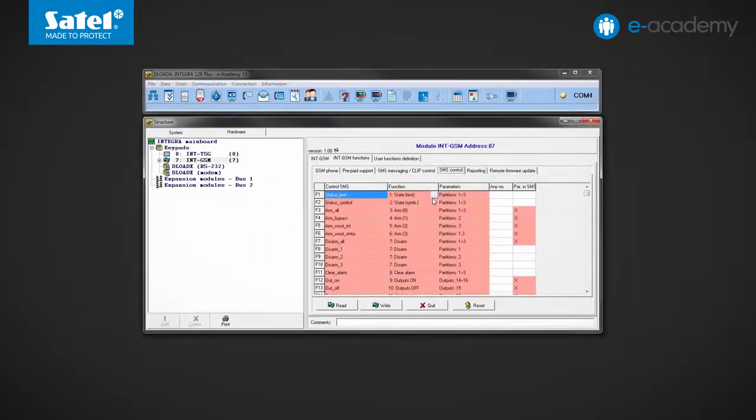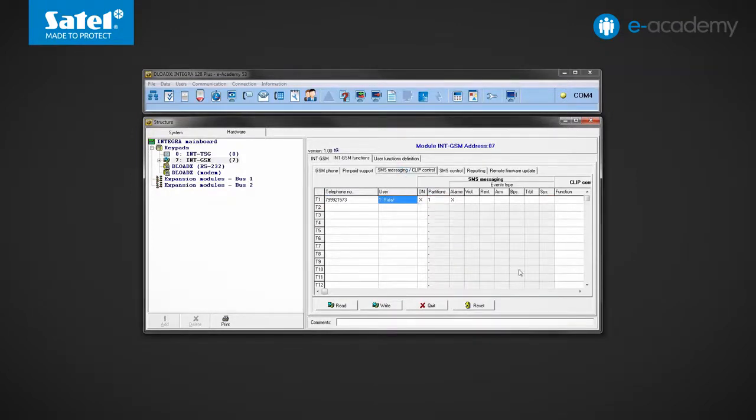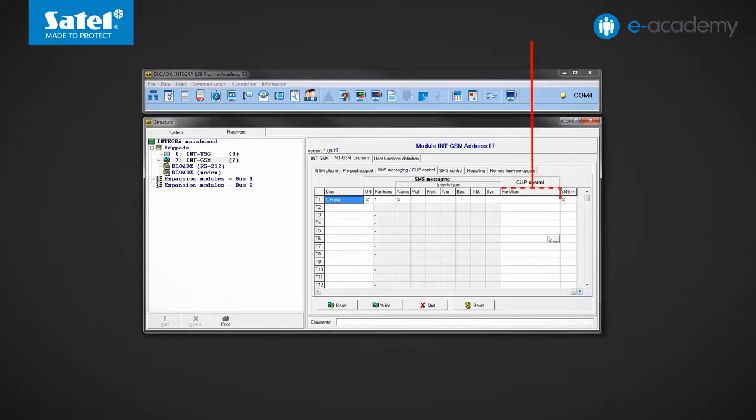Now let's return to the DLOADX program. Go to the SMS messaging clip control tab. In the last but one column of the table, you can choose what function the user of the indicated telephone number can run by calling the number of the card installed in the module.